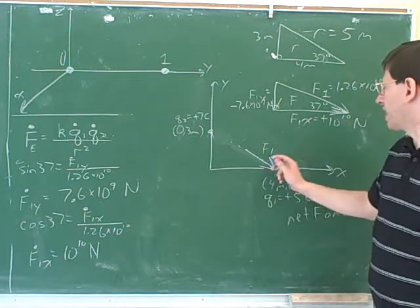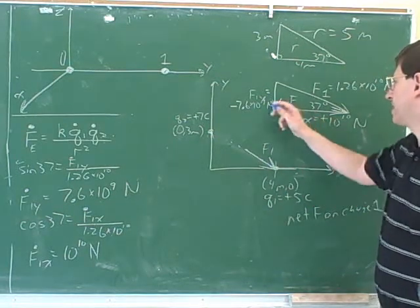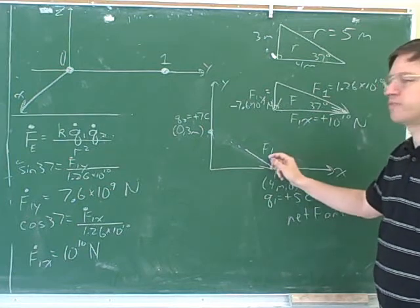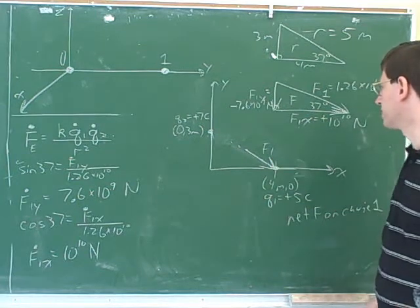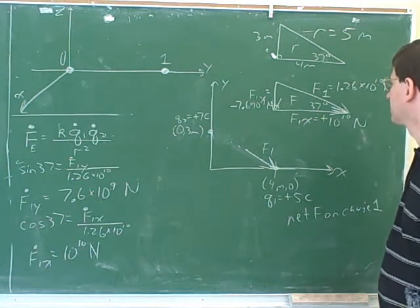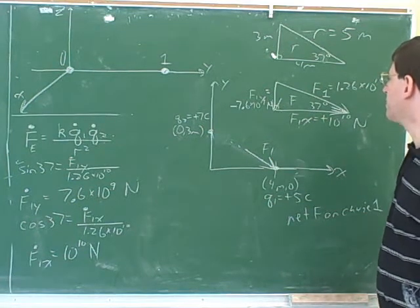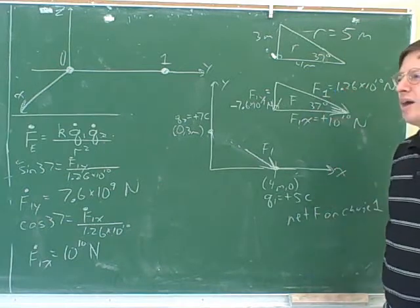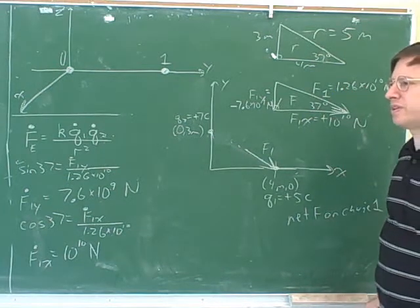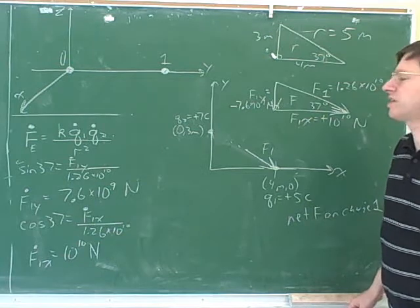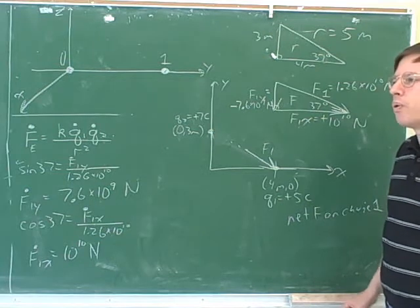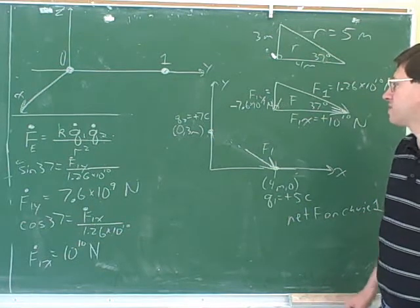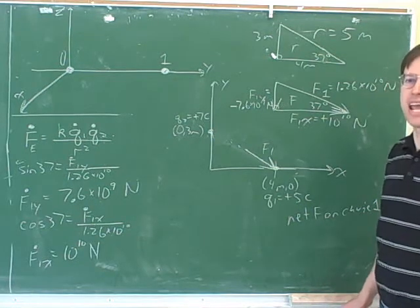Now we've specified both magnitude and direction, so we put in these signs. That would be a good way to describe this force. Remember, there are actually two ways to describe this force completely: you can break it into components, or you can give the magnitude and the direction. How would we describe the direction with an angle?